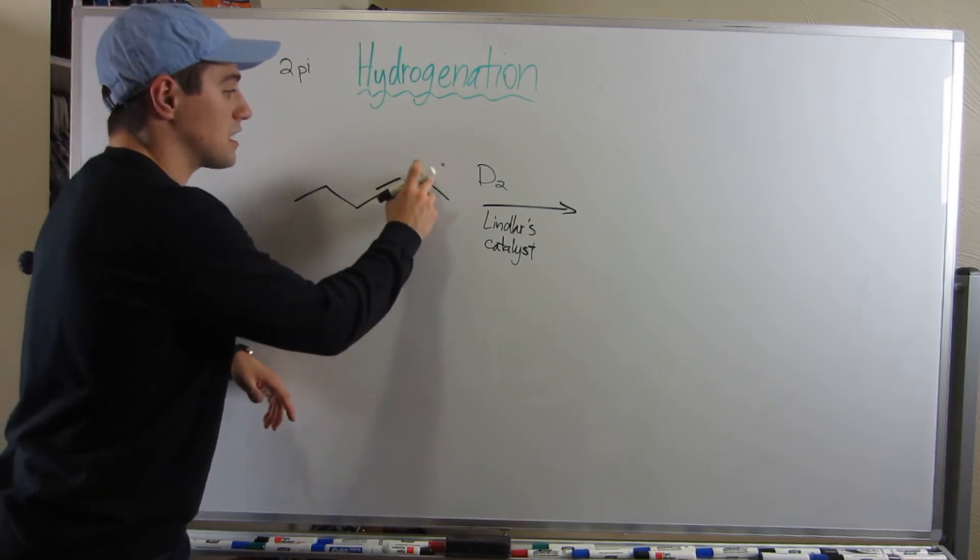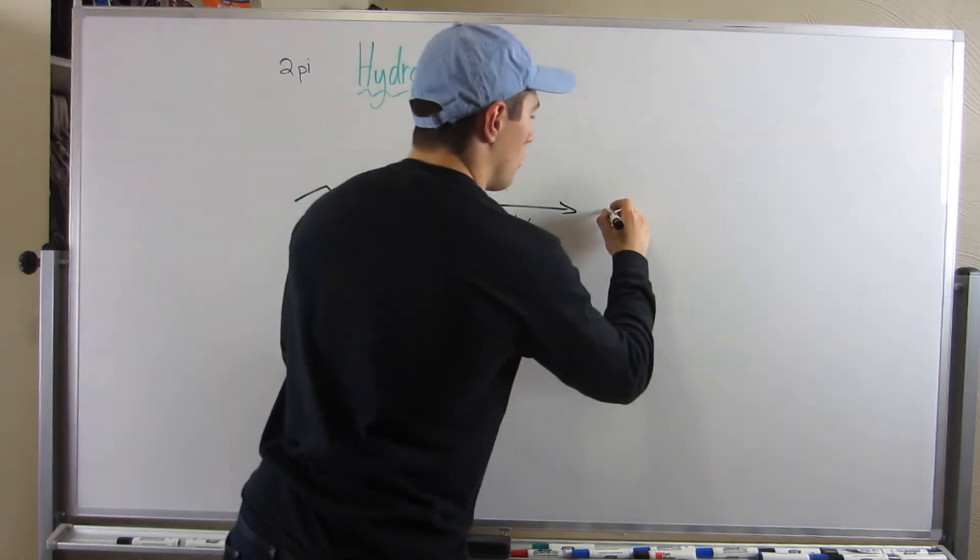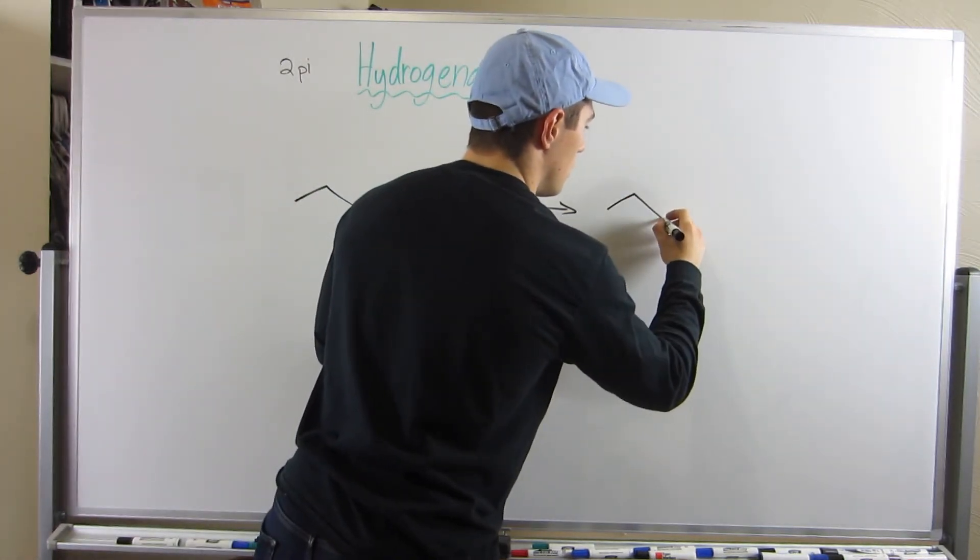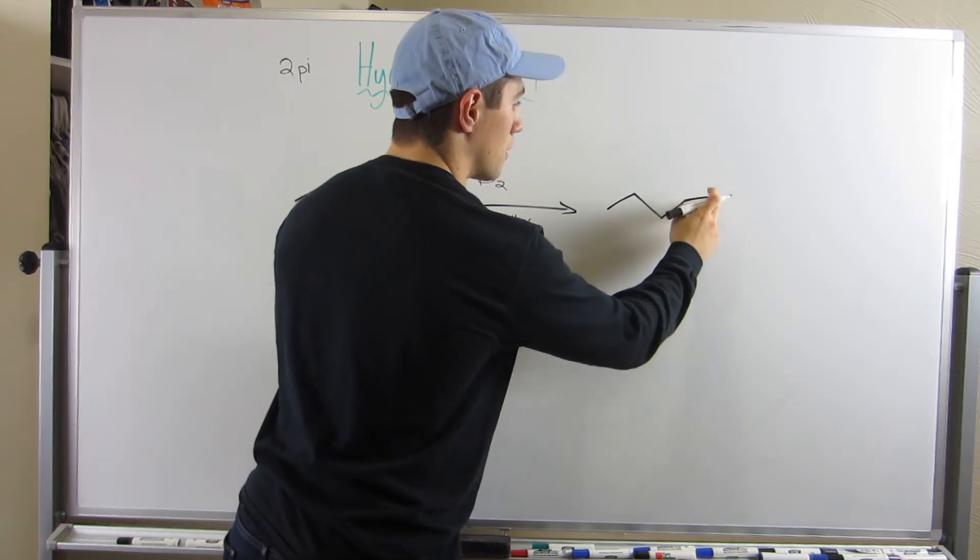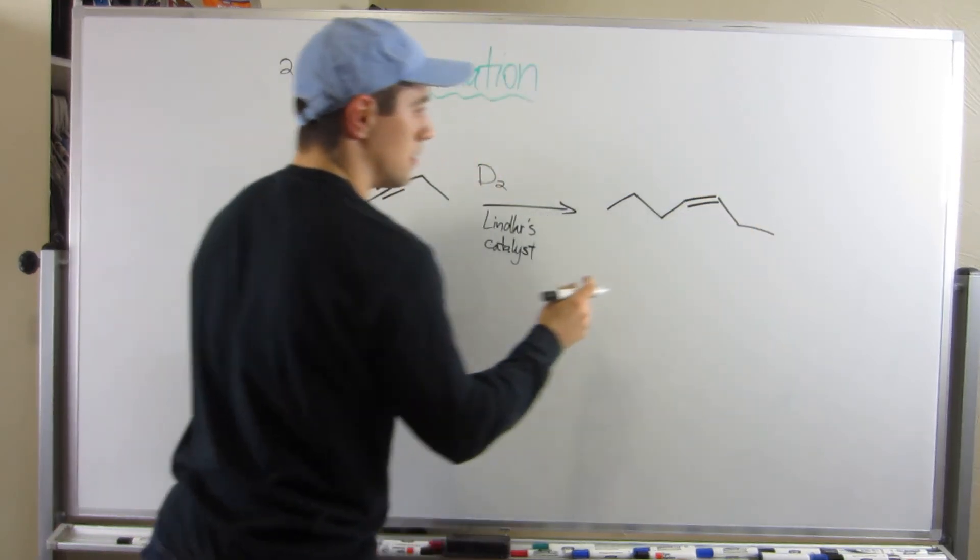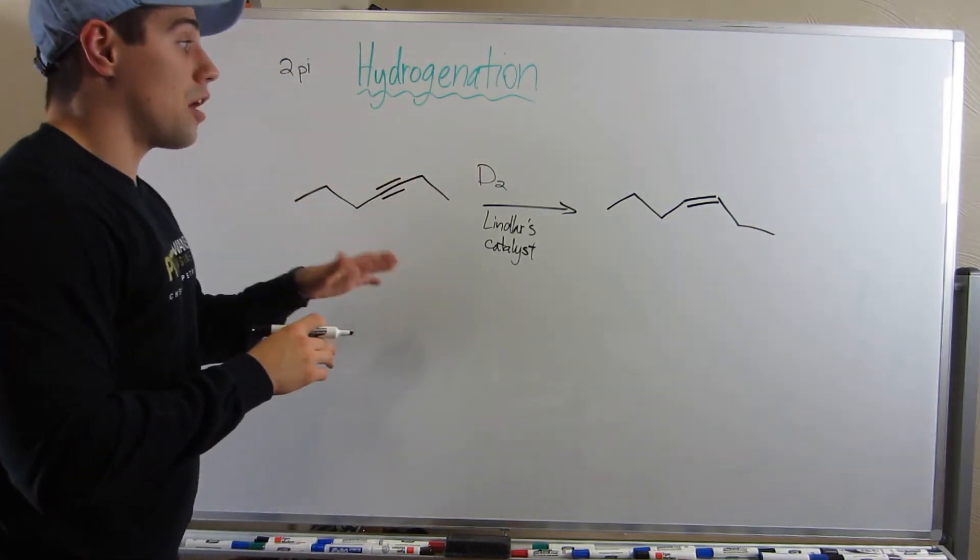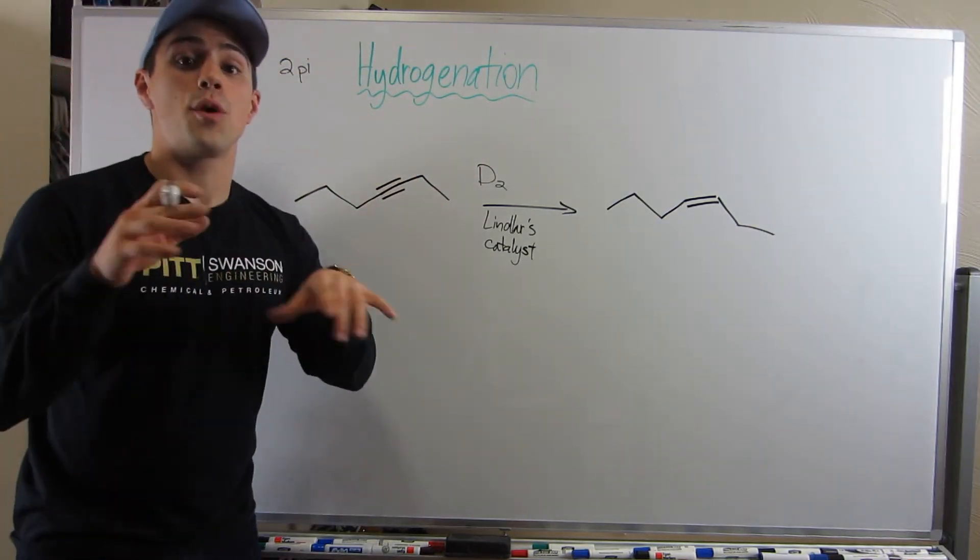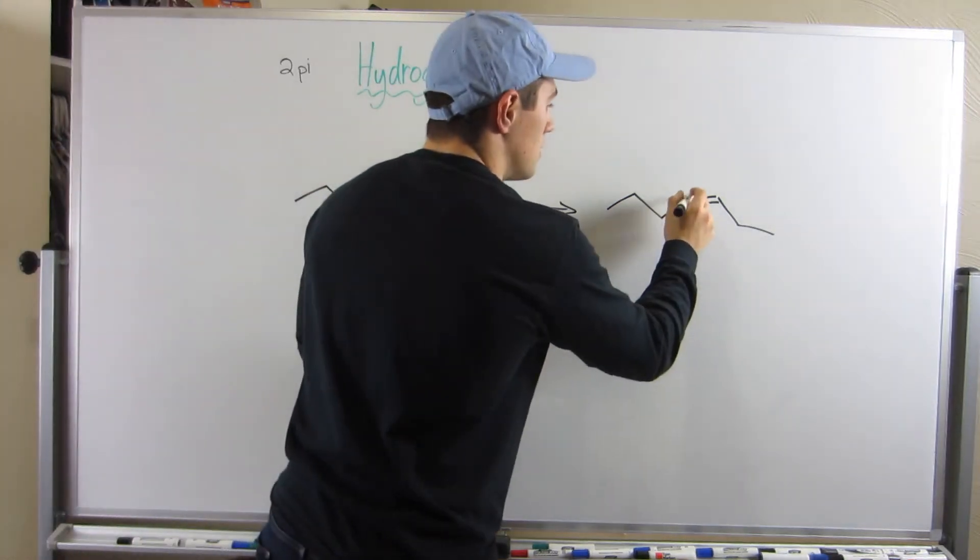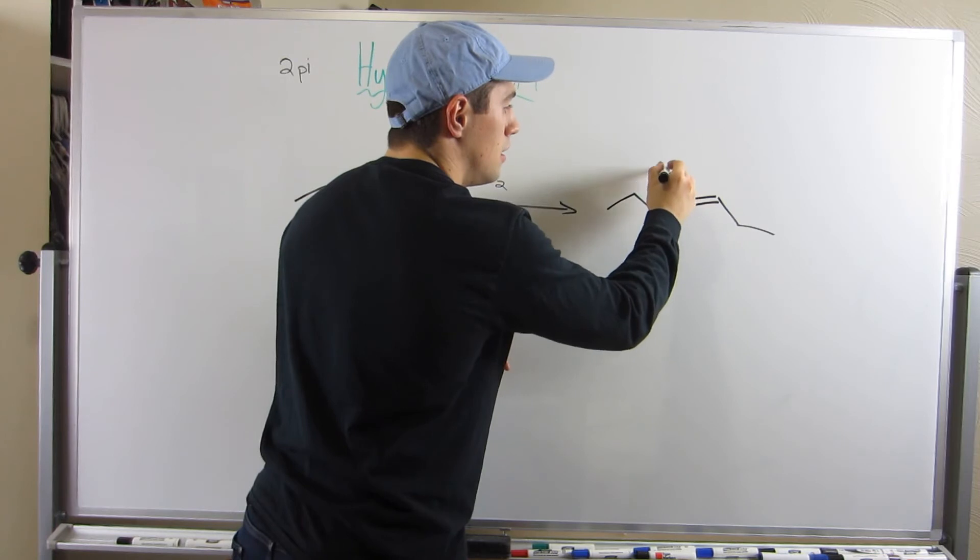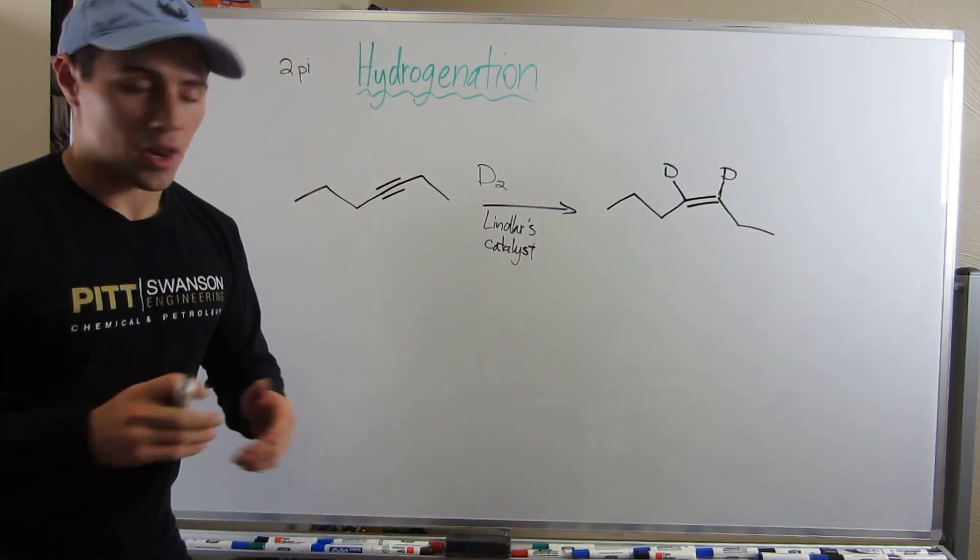[Draws and numbers the product carbons]. With hydrogen, we can leave those implied. We need to show the deuteriums. So in this case, since you have two things on this side of the double bond, the deuteriums add to the same side. Just make sure you show them.